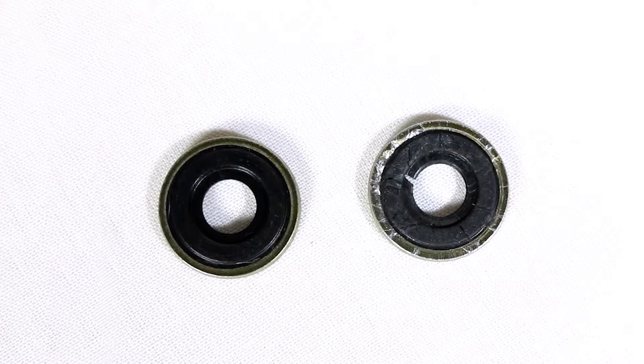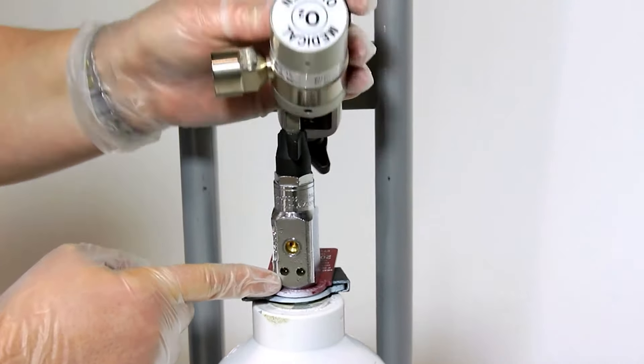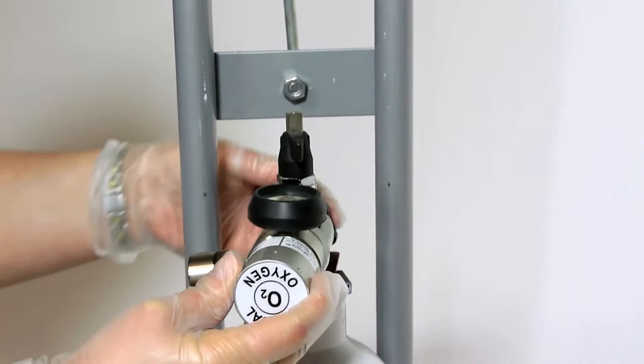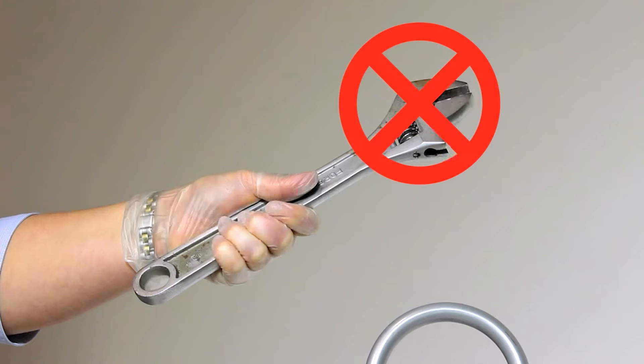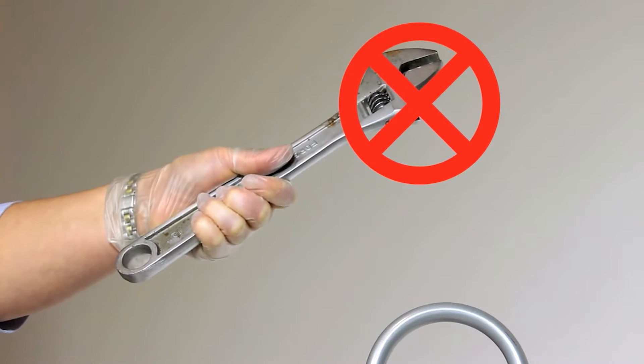To attach a regulator, place the regulator yoke over the valve and align the pins with the corresponding pin holes. Secure and hand tighten the yoke handle. Under no circumstances use tools to tighten the handle, as you may damage the regulator and endanger the user.